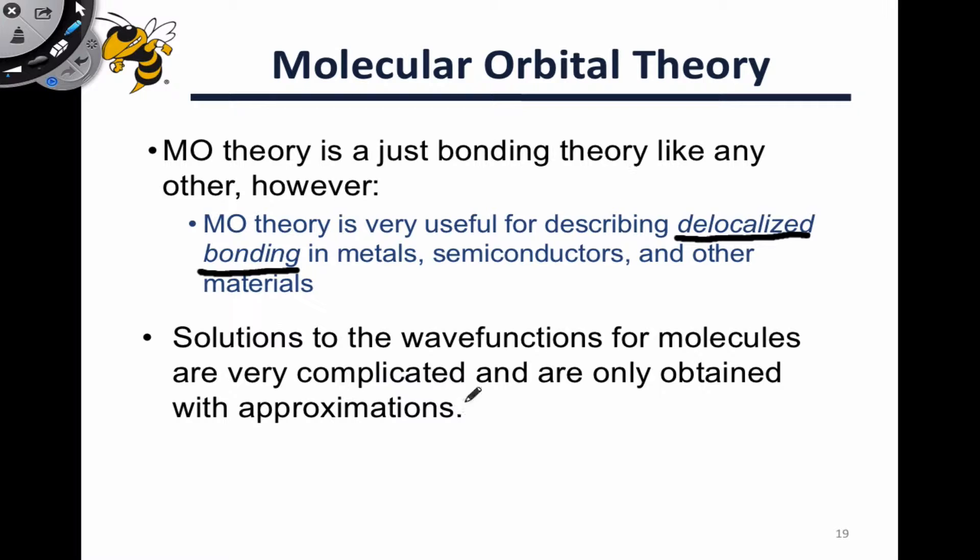Now, the Schrödinger equation looks fairly simple. It's just some operator operating on the wave function is equal to the energy value times the wave function. However, there's a ton of complexity that's buried in this Hamiltonian operator, and so the solutions end up being very complicated, and in many cases depending on the complexity of the system, we actually can't come up with analytical solutions. We have to use approximations.